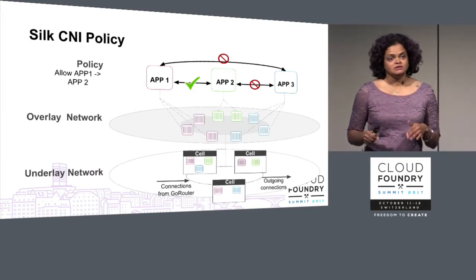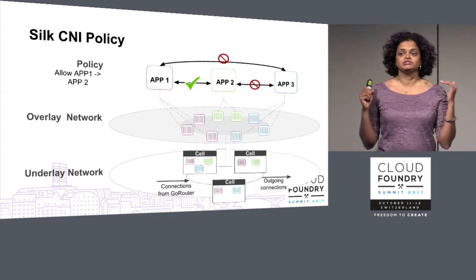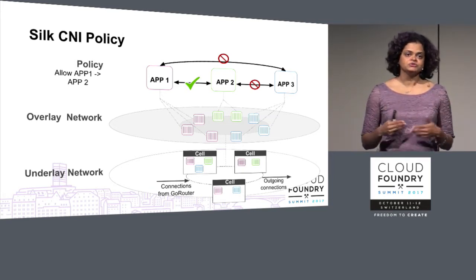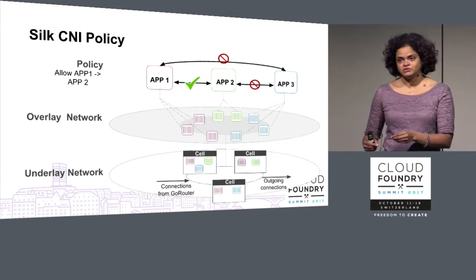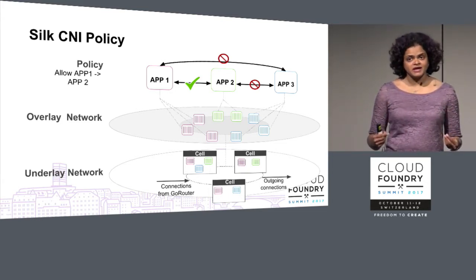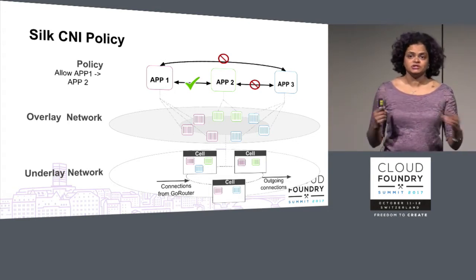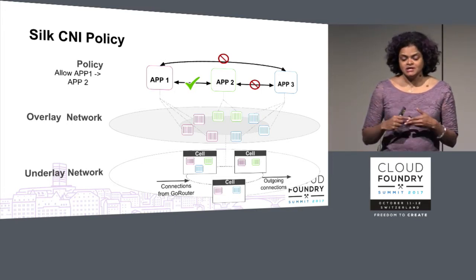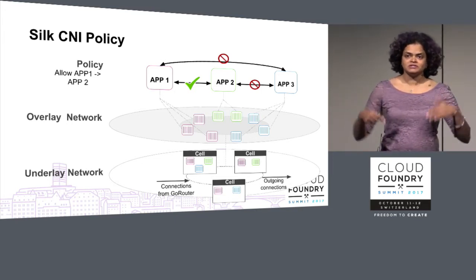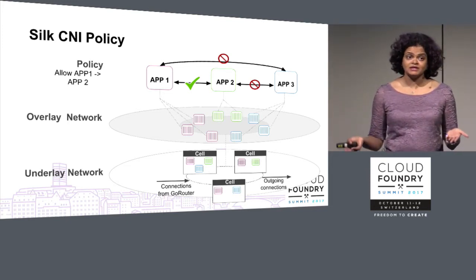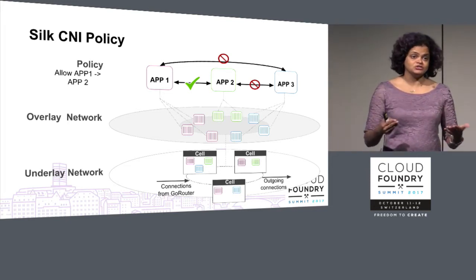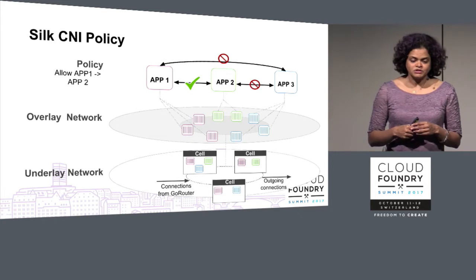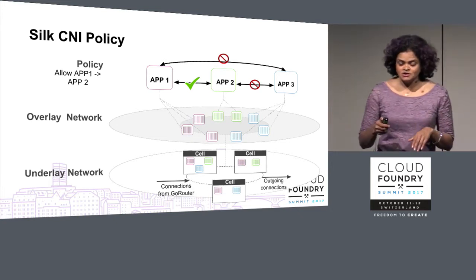In terms of policy, we made a conscious choice to define policy at the app layer. As a user, you go in and say 'I want app one to talk to app two,' and once you configure that, the policy is applied and they can talk on the overlay. As your apps move around, are brought up or down, the policy is applied automatically. This is the advantage of not having an IP-based policy, because your IP addresses are ephemeral.